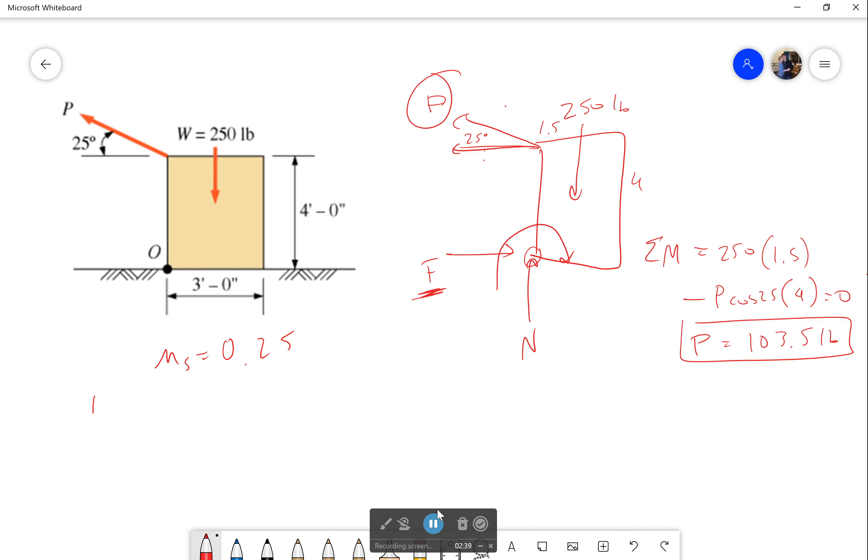Okay. So for tipping I'll put a T right here, it's going to be equal to 103.5 pounds. Now let's check and see what happens when I am sliding.